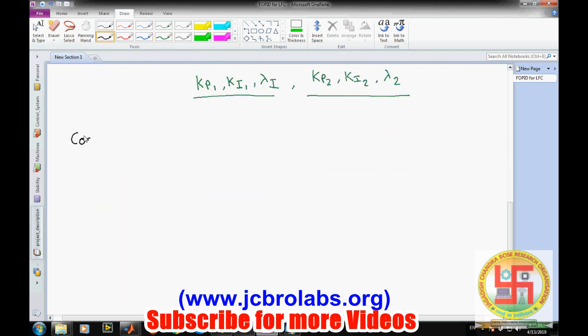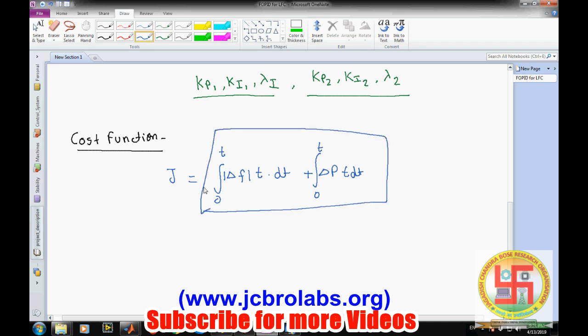The cost function which has been used for this purpose: in our case, this is delta f. We have used this cost function, integral of delta f squared times t times dt to minimize it. Most of the times, delta P is also added here, so delta P times t times dt. We have used these two parameters to minimize as a cost function.